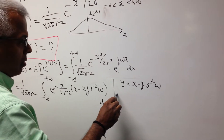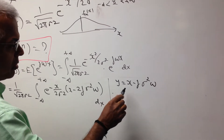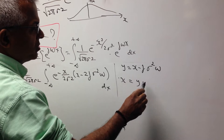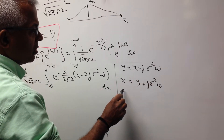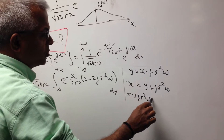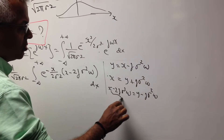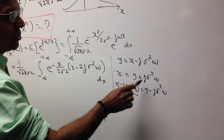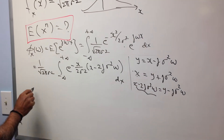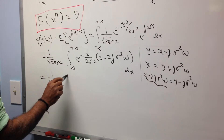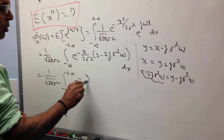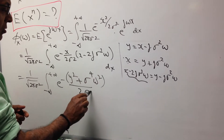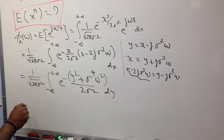With the substitution y equal to x minus j sigma squared omega, x becomes y plus j sigma squared omega, and x minus 2j sigma squared omega becomes y minus j sigma squared omega. So their product is a plus b times a minus b, which equals a squared minus b squared. So a squared is y squared, and b squared is j squared sigma to the fourth omega squared. The limits remain minus infinity to plus infinity for y. So this quickly becomes y squared plus sigma to the fourth omega squared over 2 sigma squared, since j squared equals minus 1.